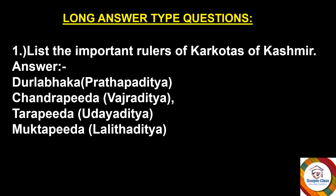Question: List the important rulers of the Karkutas of Kashmir. Answer: Durlabhaka (Pratapditya), Chandrapida (Vajraditya), Tarapida (Udayditya), and Muktapida (Lalitaditya). These were the important rulers of the Karkutas of Kashmir. If it's a one-mark question, write any two rulers' names; for two marks, write all four names.